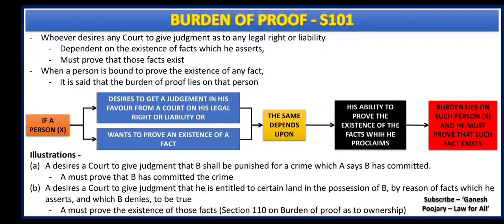Section 101 gives an introduction to chapter 7. It discusses about burden of proof and the legal provision says whoever desires any court to give judgment as to any legal right or liability, dependent on the existence of facts which he asserts, must prove that those facts exist. When a person is bound to prove the existence of any fact, it is said that the burden of proof lies on that person. I have broken this section into a simple chart.